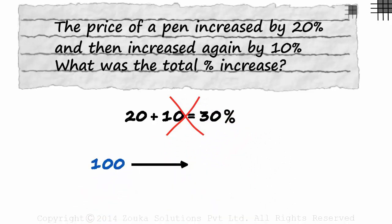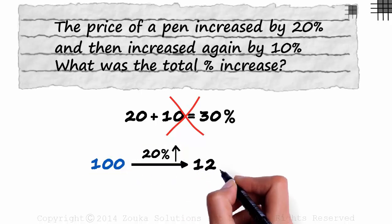Look at the number 100. Let's increase this by 20% first. An increase of 20% implies you multiply this with 1.2.